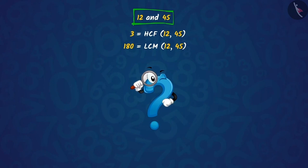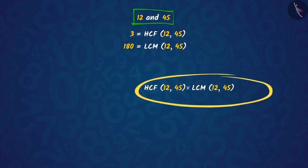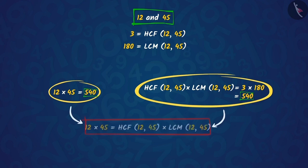What more do you notice here? Can you guess what we will get if we multiply HCF and LCM of 12 and 45? Perfect! We will get 540. On observing carefully, we find that it is equal to the product of 12 and 45.